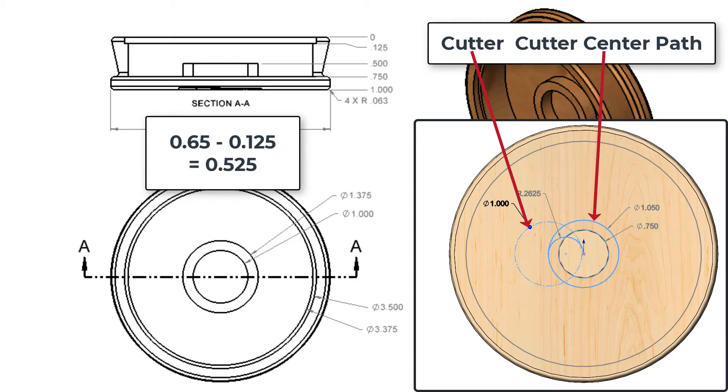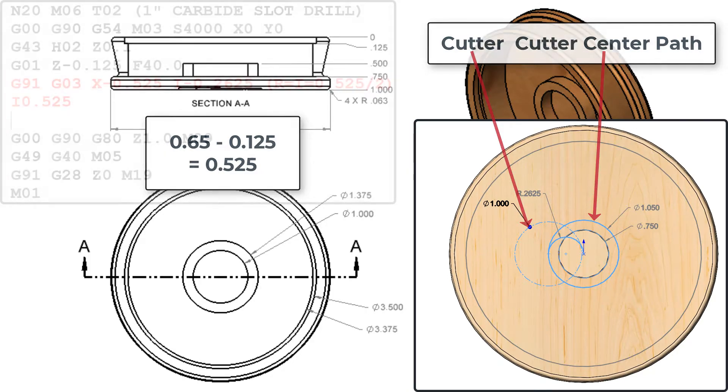In order to make the first pass remove 0.65 the cutter will need to move over 0.525.